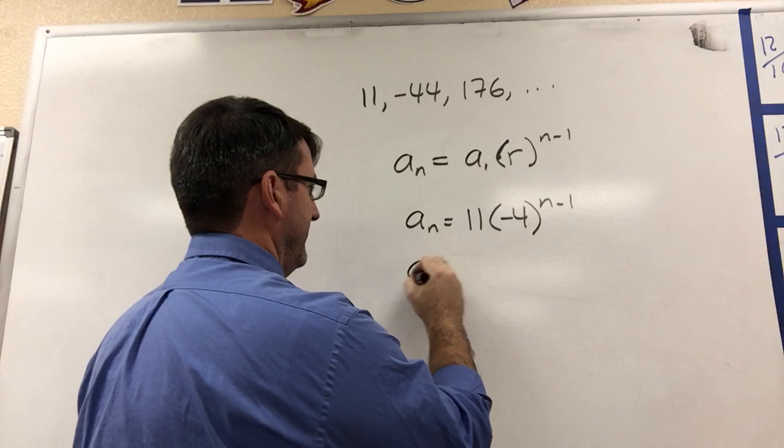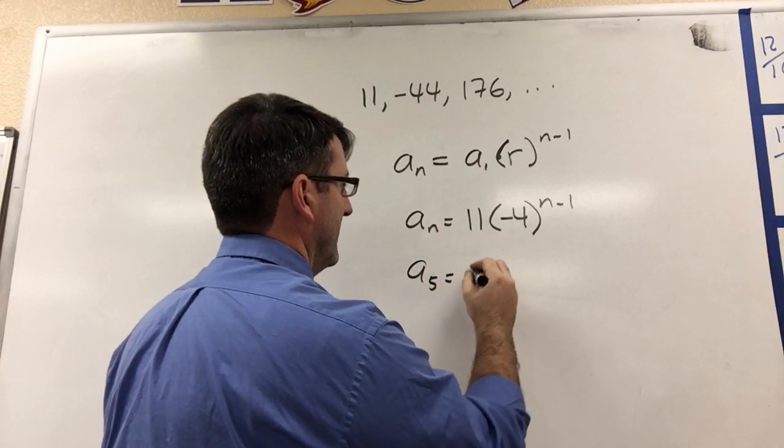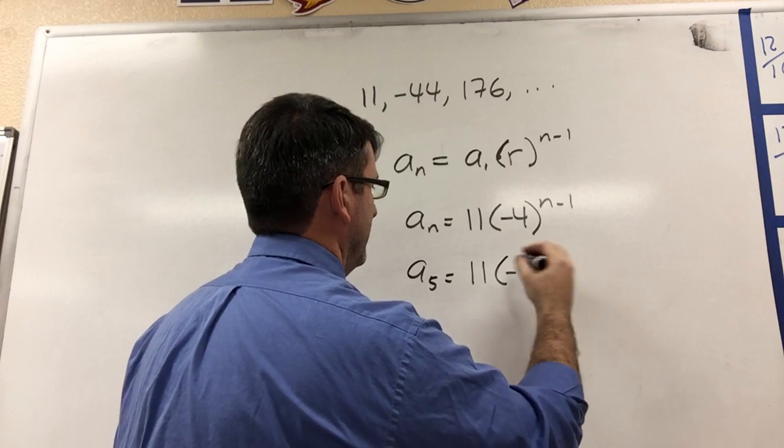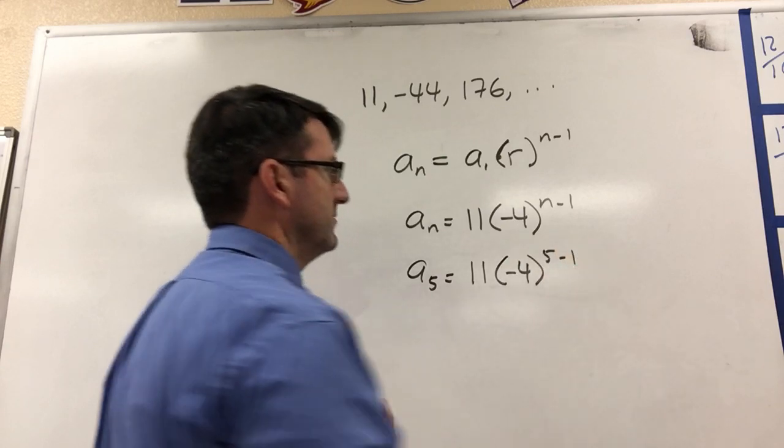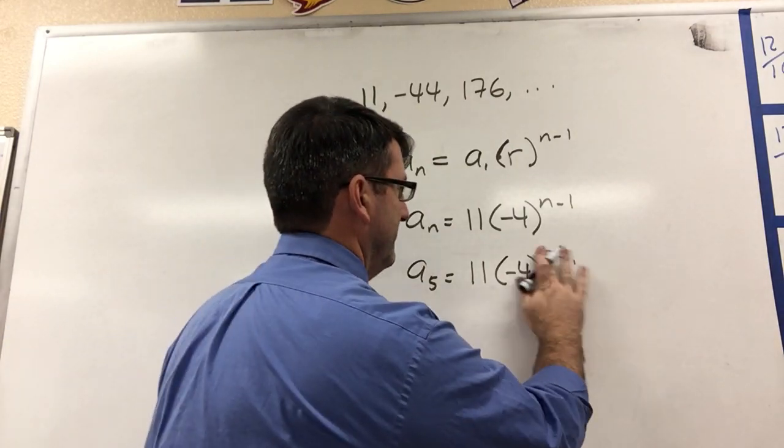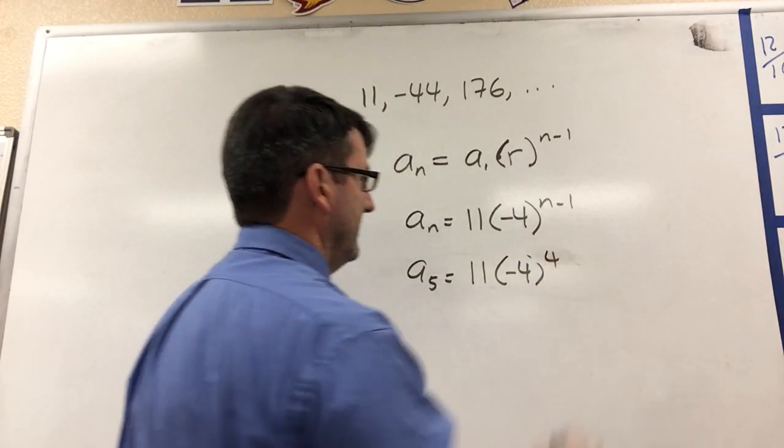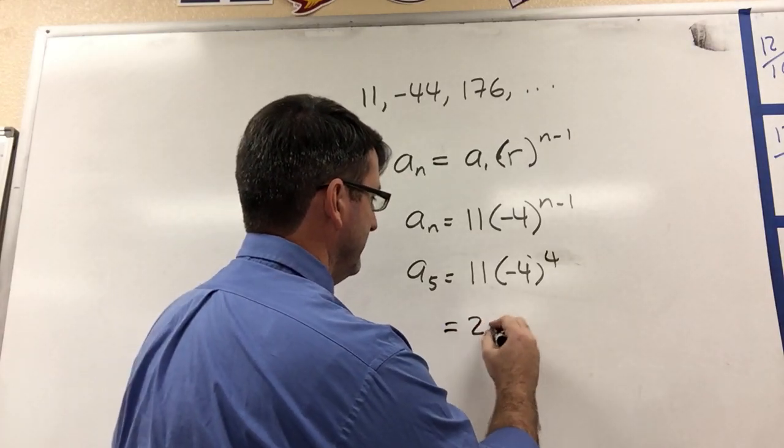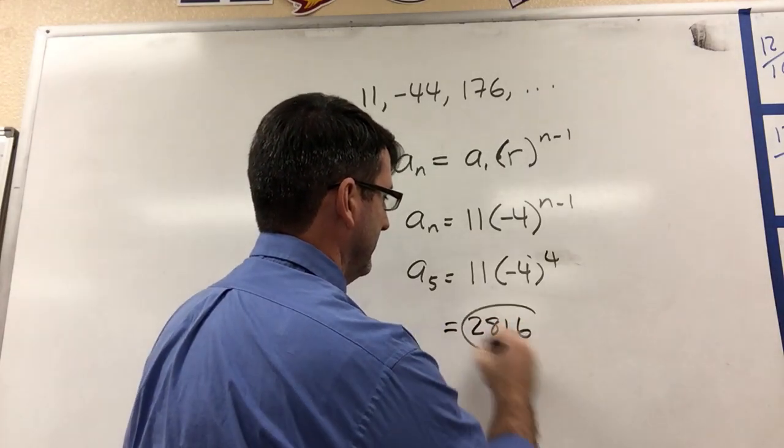To find the fifth term, we plug in 5 for n. We have 11 times negative 4 to the 5 minus 1, which is of course just 4. And if we plug that into the calculator, we're going to get 2816.